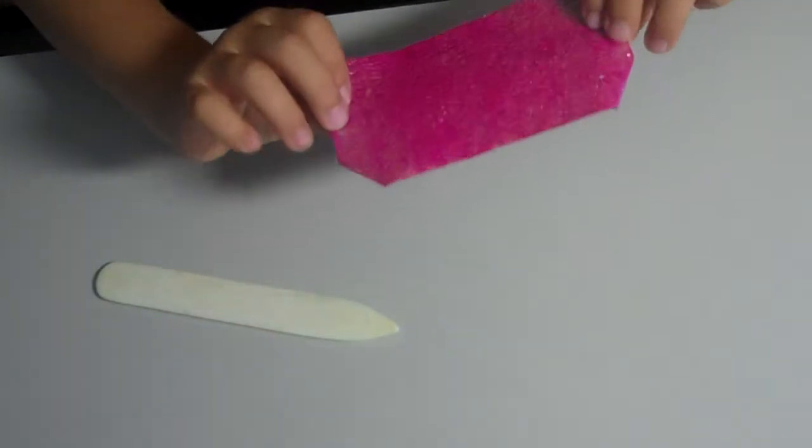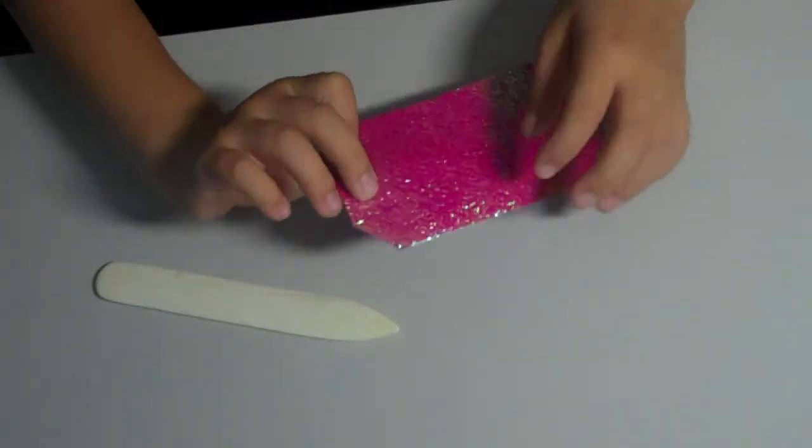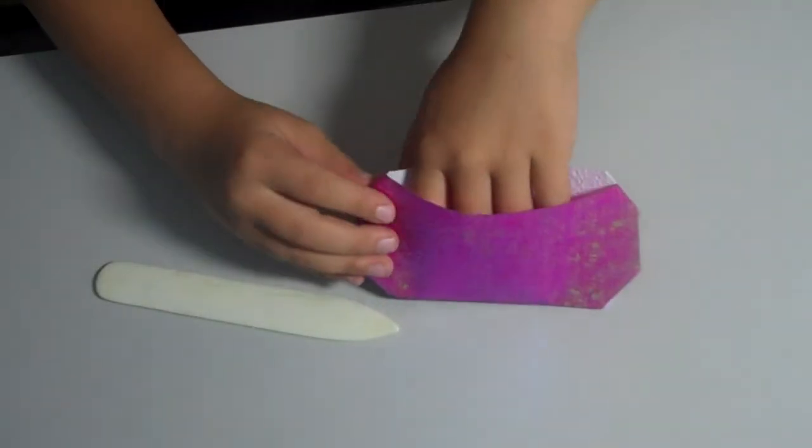So then there you have the origami pickle cup. Oh, and the flap's up here. Then you just open it and put water in it.